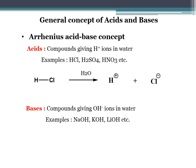When we consider the definition of a base, the molecule which gives hydroxide ions in water is called a base. Examples include sodium hydroxide, potassium hydroxide, and lithium hydroxide. When sodium hydroxide is dissociated in water, it gets converted into Na⁺ and OH⁻ ions. So according to the Arrhenius acid-base concept, acids are those compounds which give the H⁺ ion and bases are those compounds which give the hydroxide ion.